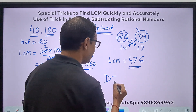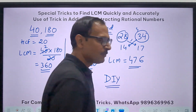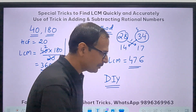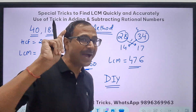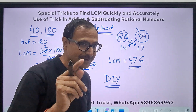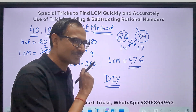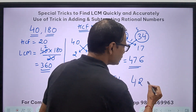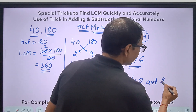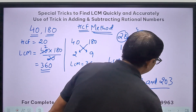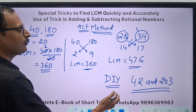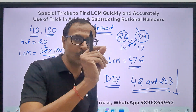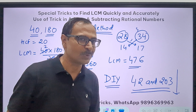DIY — do it yourself! Post your comments. The question: find the LCM of 42 and 203 using the HCF method. Post in the comment box below, and include the time it took you to crack this question.